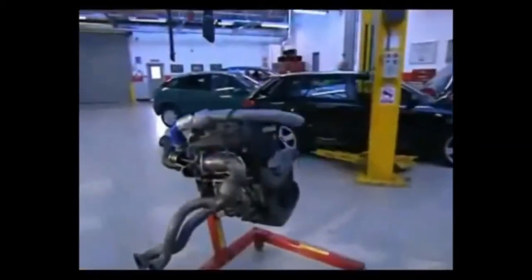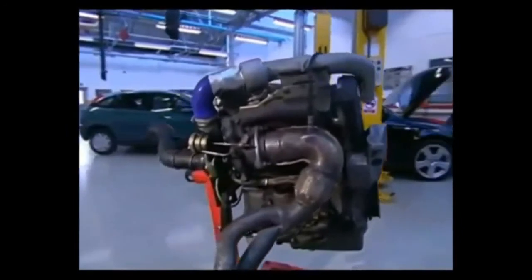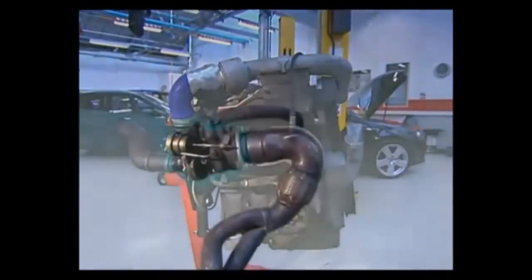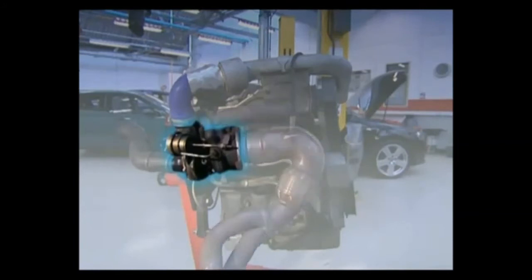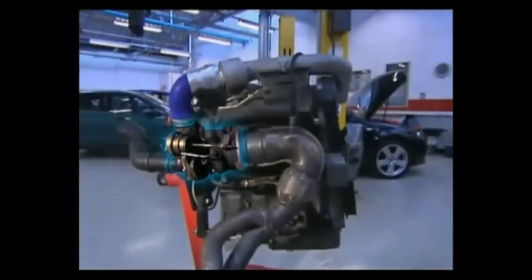The turbo is mounted in the exhaust system between the exhaust manifold and the exhaust pipe. As exhaust gas exits the engine, it drives the turbine, which turns the compressor, pulling in air and compressing it. Oil passes through the turbo, providing vital lubrication.